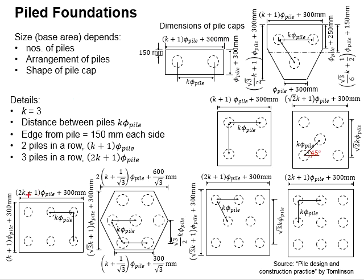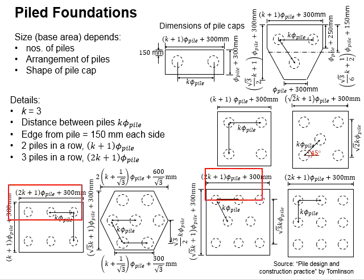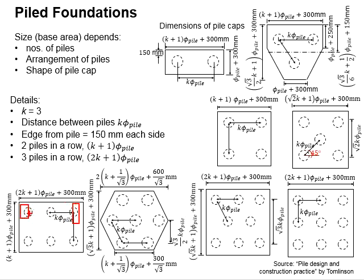The same principles apply for three piles in a line. That equals 2 times k times the pile size, plus half of the pile on each end, plus 150 mm edge distance on each side. That gives the formula: (2k + 1) times the pile size plus 300 mm.